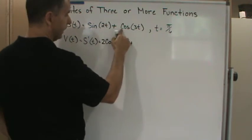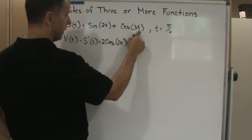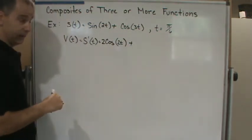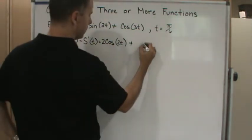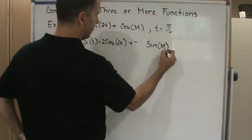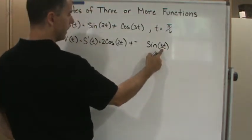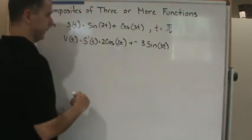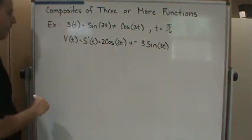Plus the derivative of the outside function, which is negative sine of 3t, times the derivative of the inside function, which is 3.